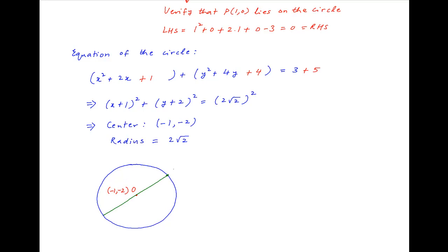The endpoint of one of the diameters of the circle is the point P with coordinates (1,0), and the opposite end of this diameter, let's denote it by Q, is what we have to find. Let's assume that the coordinates of Q are (α,β). Since the center O of the circle is the midpoint of the diameter PQ.